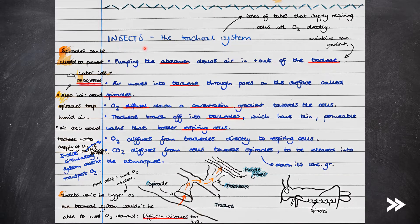Next we have insects. Gas exchange in insects relies on something called the tracheal system. The tracheal system is a series of tubes that supply respiring cells with oxygen directly. By pumping the abdomen, air is drawn in and out of the tracheae. This maintains a favourable concentration gradient for the diffusion of oxygen and carbon dioxide into and out of respiring cells. Air enters the tracheae through pores on the surface of the insect called spiracles. Oxygen diffuses down a concentration gradient towards the respiring cells. The tracheae branch off into tracheoles, which have thin, permeable walls that border respiring cells. Oxygen then diffuses from the tracheoles directly into the respiring cells. Carbon dioxide diffuses out of the respiring cells towards the spiracles down its concentration gradient, and is then released into the atmosphere.